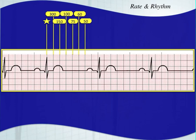You count the big boxes between that QRS complex and the next one. You're going to take the number of big boxes and divide 300 by that number. If you only had one big box, you would do 300 divided by one, which equals 300 beats per minute.